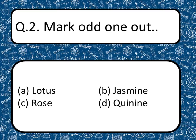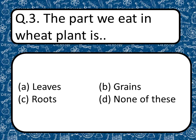rose, and cumin. The correct answer is cumin, because the rest are flowers. Third question: The part we eat in the wheat plant is — guess your answer — grains. We eat grains.